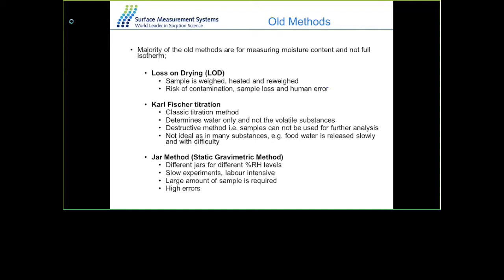The jar method is a static gravimetric method where different jars — sometimes a room full of jars — are used with different saturated salt solutions in them to provide different percentage relative humidity. This is a very slow technique; it could take weeks or months to get an isotherm. It's very labor-intensive, requires a large amount of sample, and involves weighing errors and contamination.